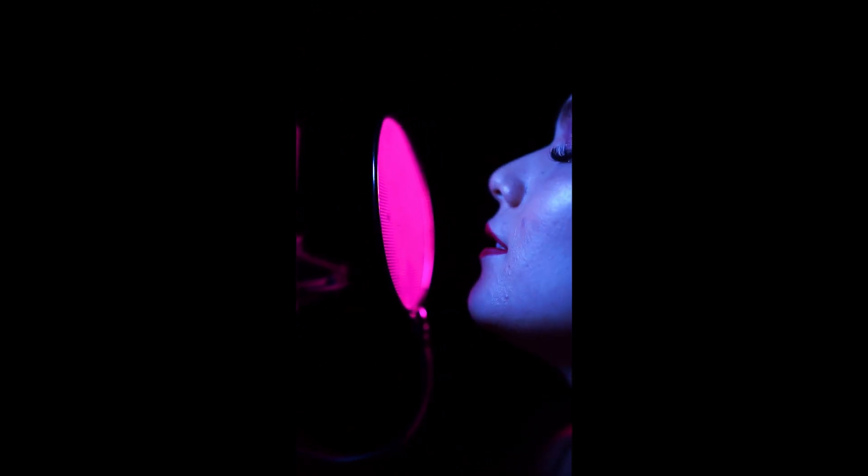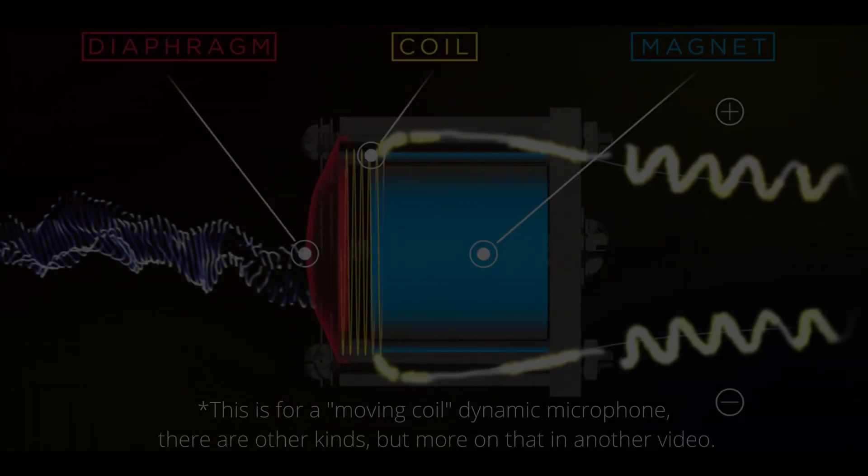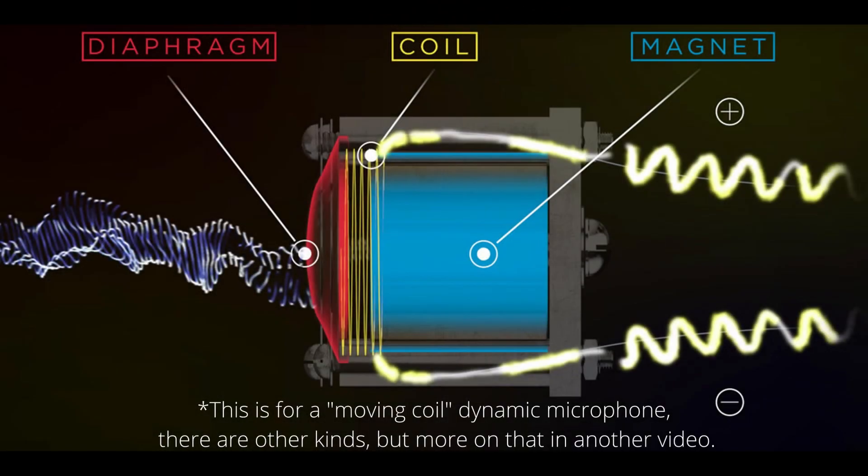If we want to record audio, we have to capture that energy and convert it into some form that we can control and reproduce. So we use a microphone, which interestingly acts a lot like our ear. A membrane, or diaphragm, receives the sound wave and moves an induction coil through a magnetic field, producing a varying current.